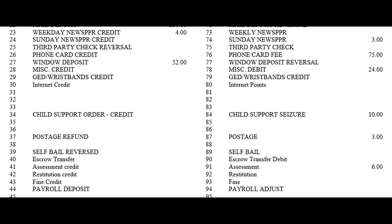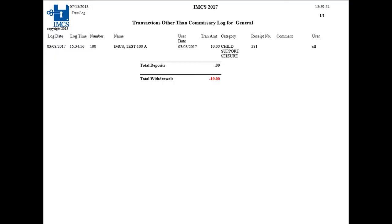All transactions in Keep Account Online are assigned category codes, most of which the institution assigns descriptions to fit the needs of the institution. An example would be child support. All child support withdrawals would be categorized with the child support code. When your institution needs to write a check, a category summary report can be run for the check total. A transaction log could be run to show what was collected from each inmate.